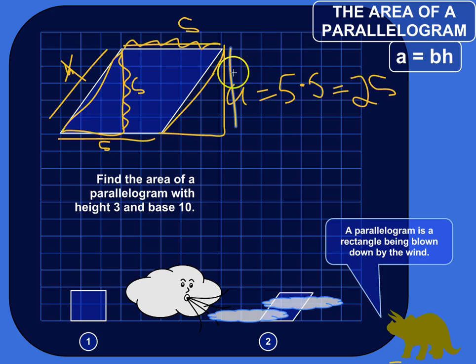So base times height with the understanding that the height is the distance between the two bases. So if you're given just the base length and you can figure out the height, you can get the area of the parallelogram.